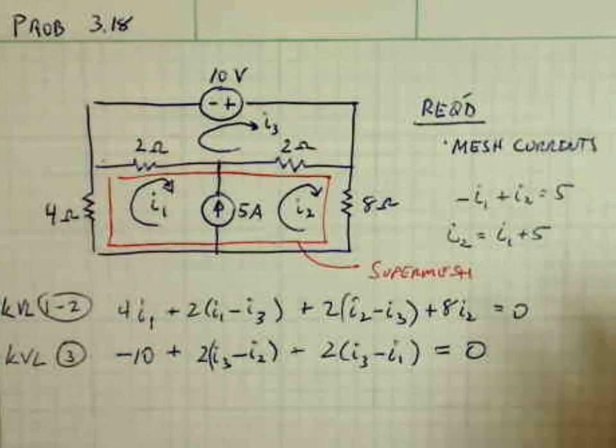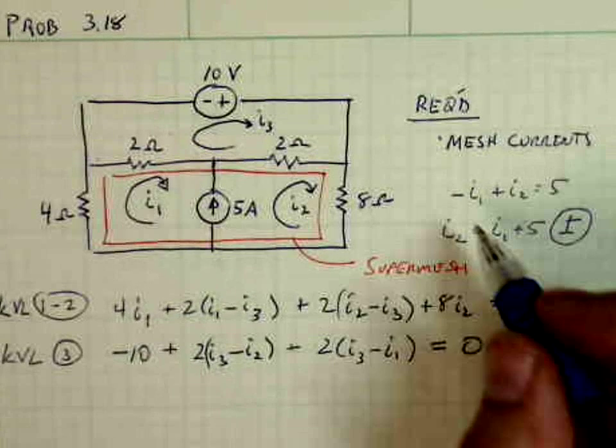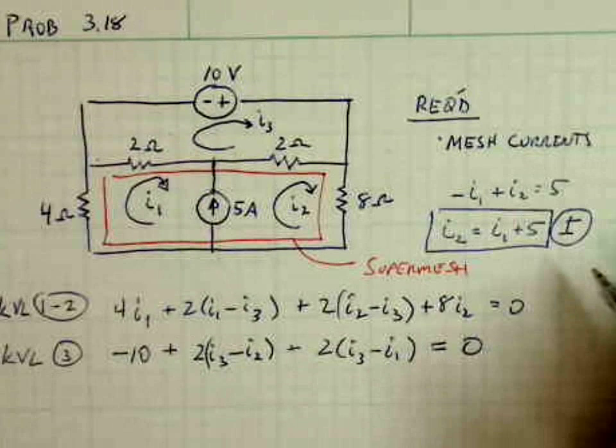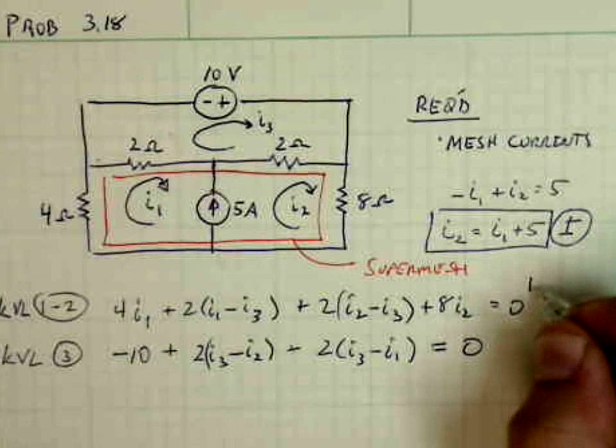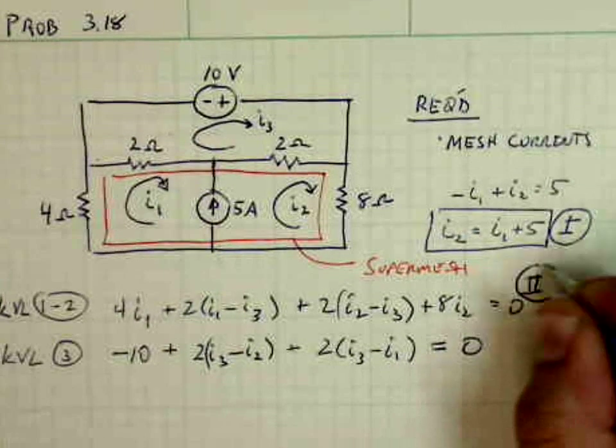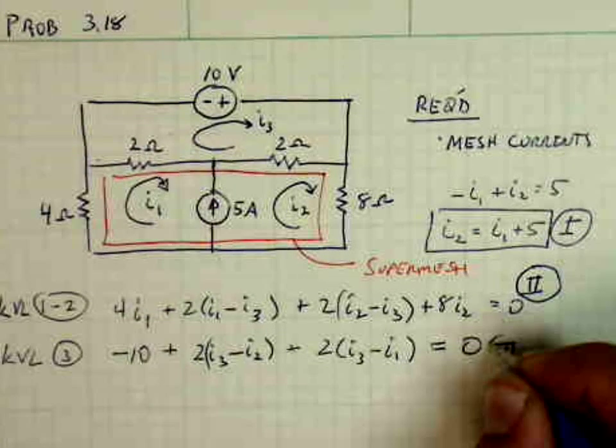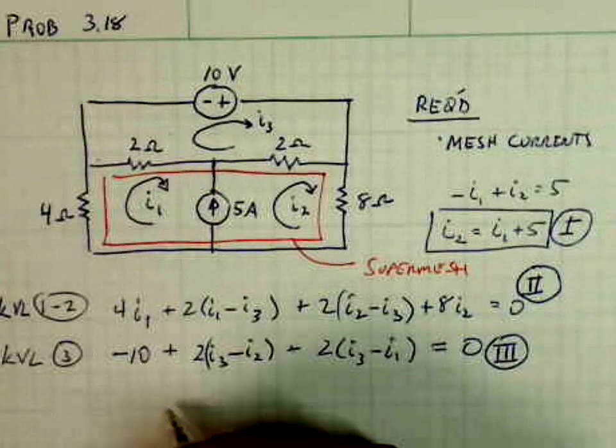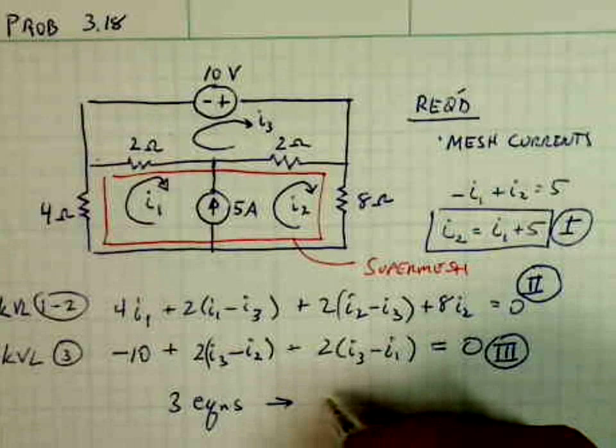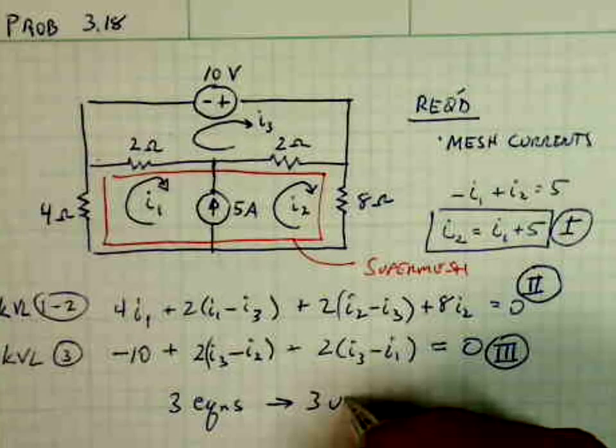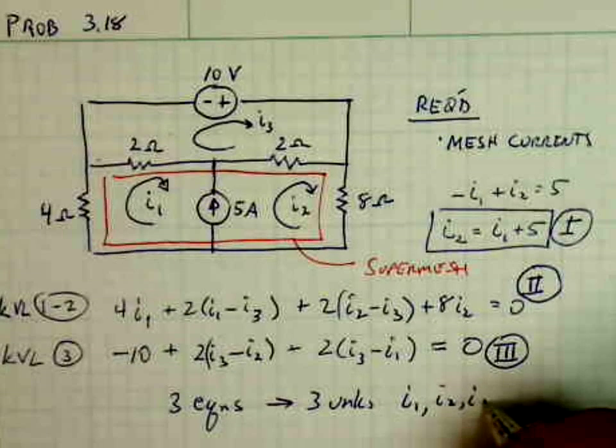So now I have three equations. I have this equation which is from the super mesh or relates the mesh currents in the super mesh. I have KVL of the super mesh and KVL of mesh 3. So three equations should solve three unknowns: I1, I2, and I3.